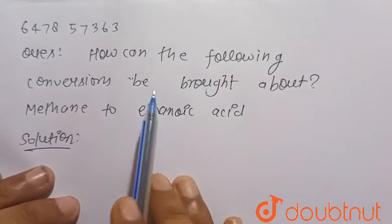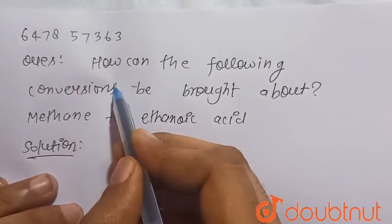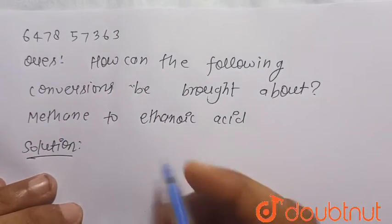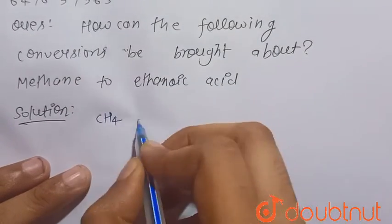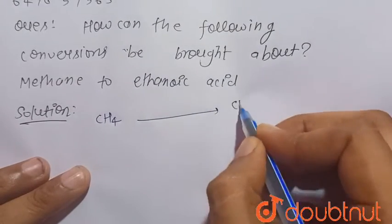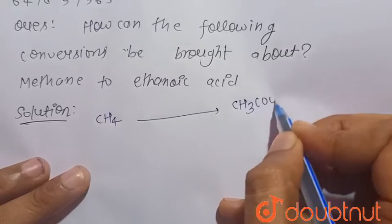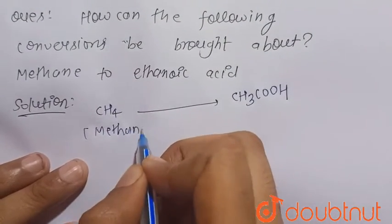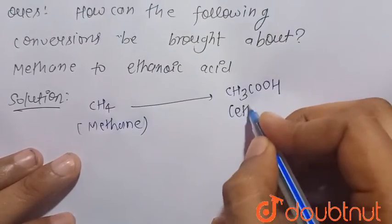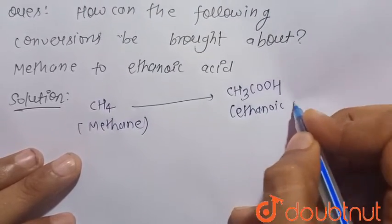How can the following conversion be brought about? That is, we have to convert methane to ethanoic acid. So we know that methane, that is CH4, we have to convert this methane into ethanoic acid or acetic acid, that is CH3COOH. This is the methane and this is ethanoic acid or acetic acid.